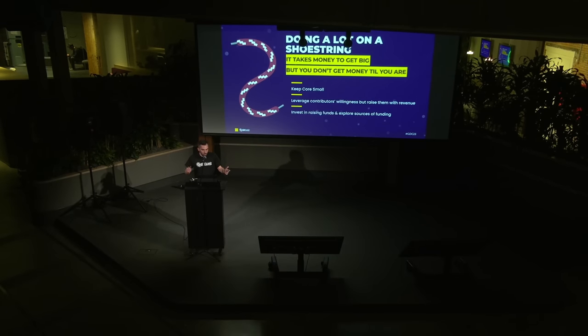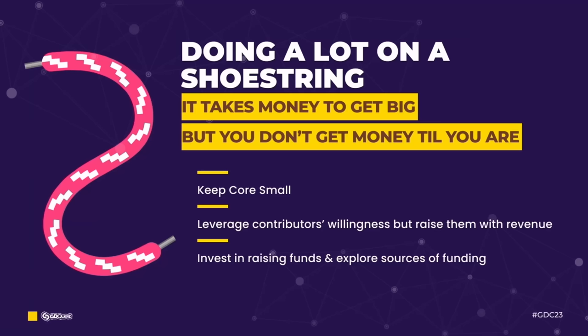We're going to start by talking about budget — how do you raise funds and do a lot on a shoestring budget? By definition, when you create free and open source software, you don't make money by directly selling the technology. So this limits who and how you can ask for money. As you grow, you will likely keep lacking funds, and you should expect to have one to two orders of magnitude less budget to work with than the larger companies you're competing with. So you have to learn to do a lot with a little.